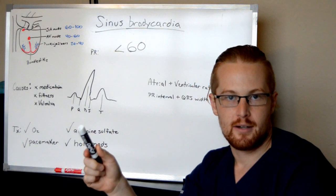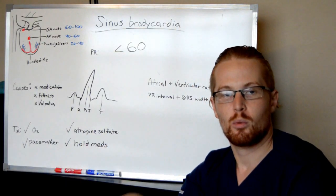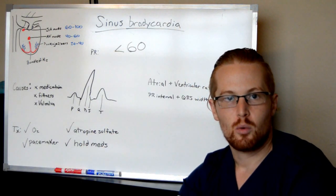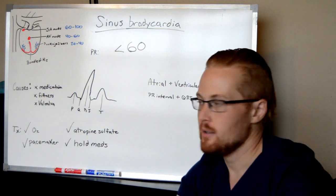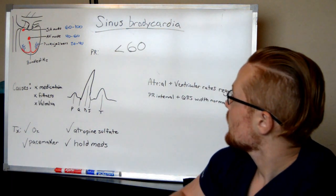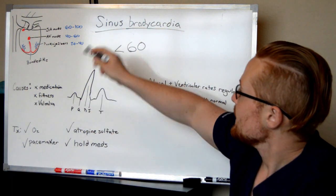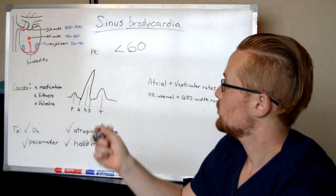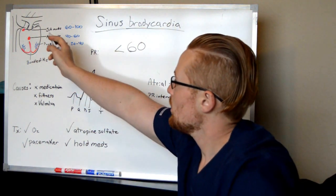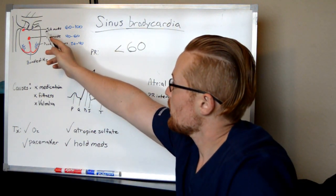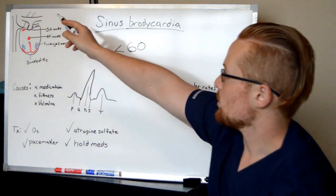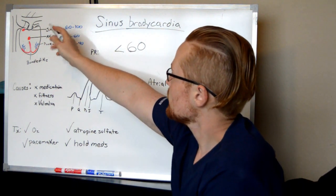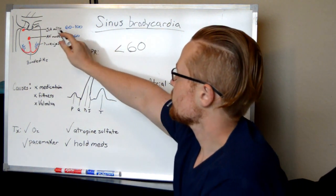Sinus bradycardia. When we're talking about sinus bradycardia, we're talking about a low heart rate. The sinus comes from the conduction system of the heart. If you look at the heart, you have the SA node — this is sinoatrial. Sino is where you get sinus from.